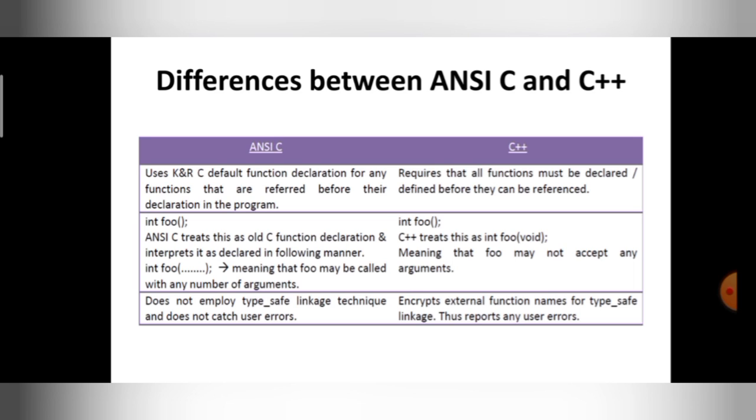No message will be given by ANSI C. But in C++, it is not the case. It has some type-safe linkage. If any errors happen by declaring or defining, the message will be given to the user. Here it will report the errors to the user.